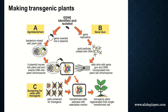Now let's see how transgenic plants are made. This diagrammatic representation shows how transgenic plants are produced using various ways — two ways are given here. The gene of interest is first identified and isolated. In the Agrobacterium-mediated procedure, the isolated gene is inserted into a Ti plasmid and the bacterium is mixed with plant cells.